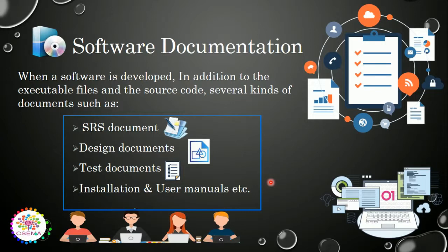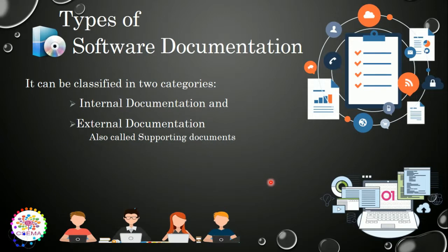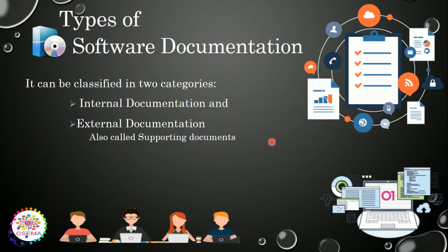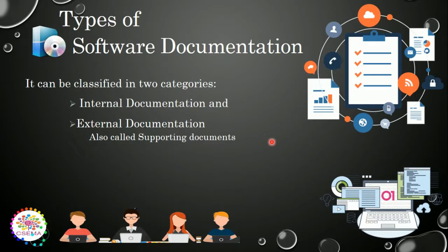Software documentation plays an important role in providing better functionality and better maintenance of the software system. All these documentations are classified into two categories: the first is internal documentation, related to coding and requirements, and the second is external documentation, also called supporting documents, which may include hardware specifications, user manuals, and so on.